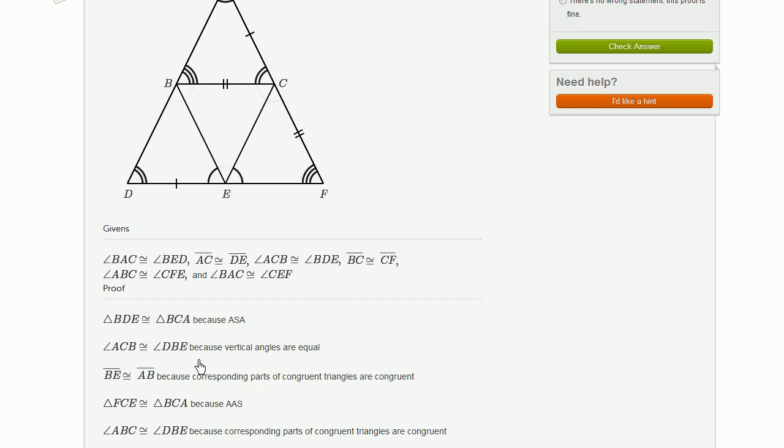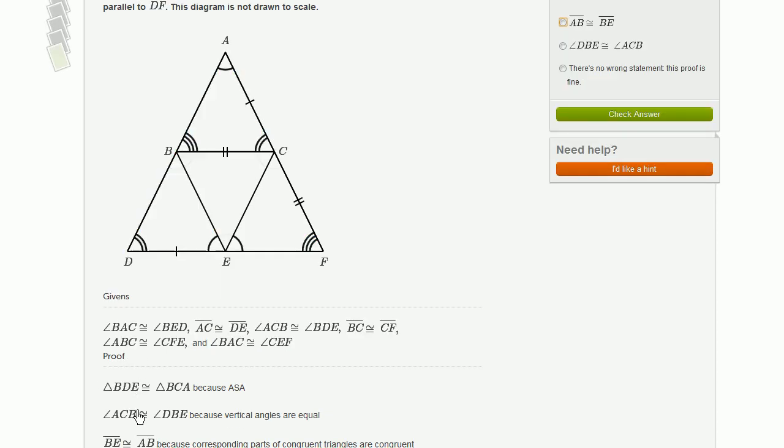Then they say angle ACB is congruent to DBE because vertical angles are equal. ACB and DBE. Well, this makes absolutely no sense. Those aren't vertical angles.